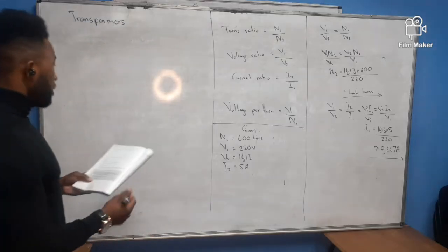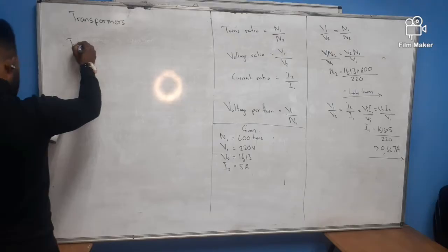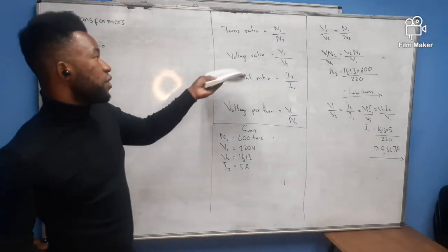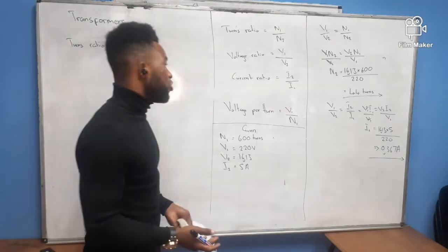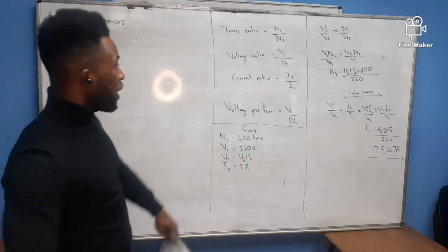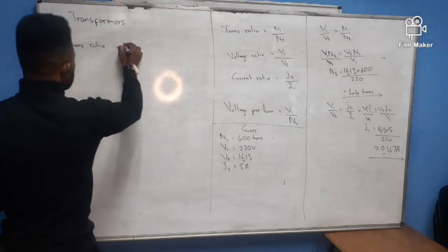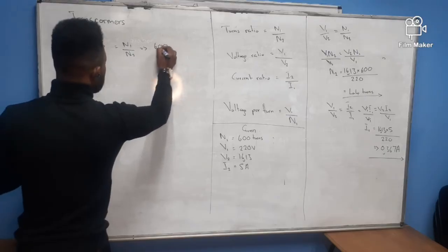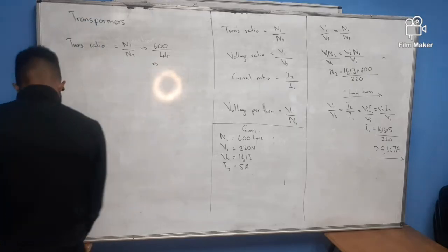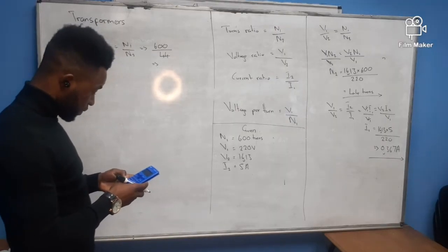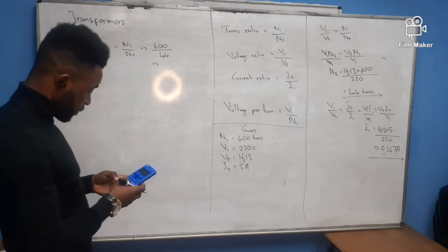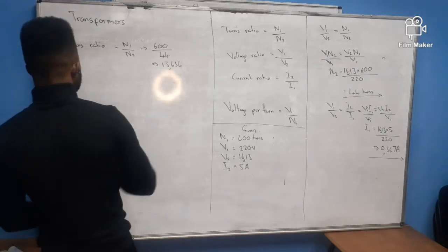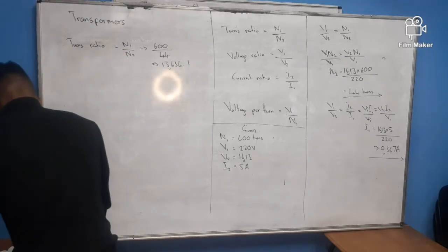Part C asks for the turns ratio. Remember, the turns ratio equals N1 over N2, and it should be the same as the voltage ratio V1 over V2. Using N1 over N2: 600 divided by 44 gives approximately 13.636, expressed as a ratio of 13.64:1.